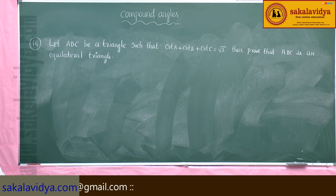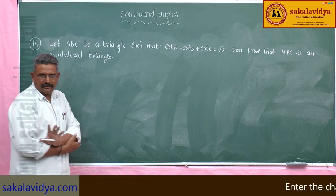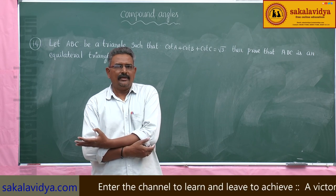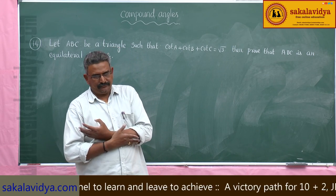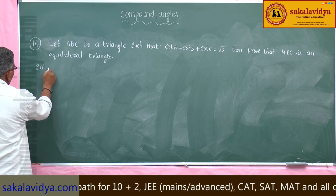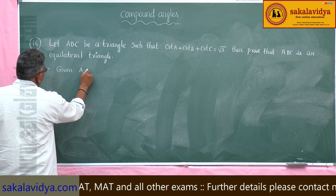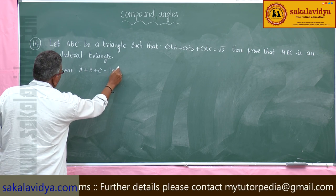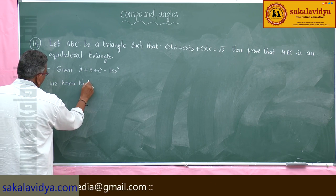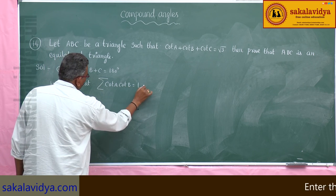So, this problem is very, very important. In order to prove equilateral triangle, it is enough to prove that angle A is equal to angle B is equal to angle C, and each becomes 60 degrees. Now, A, B, C is a triangle means A plus B plus C is equal to 180 degrees, and we know that sigma cot A cot B is equal to 1 — say equation 1.